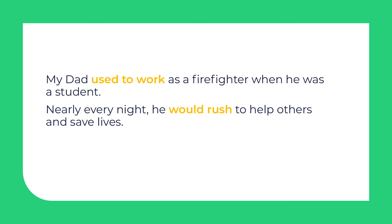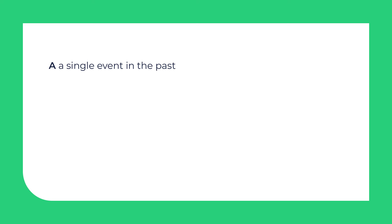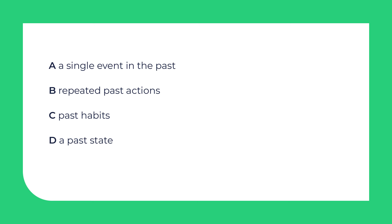Have you noticed the grammar constructions from the previous lesson? My dad used to work as a firefighter when he was a student. Nearly every night he would rush to help others and save lives. Which sentences describe: A. A single event in the past. B. Repeated past actions. C. Past habits. D. A past state.